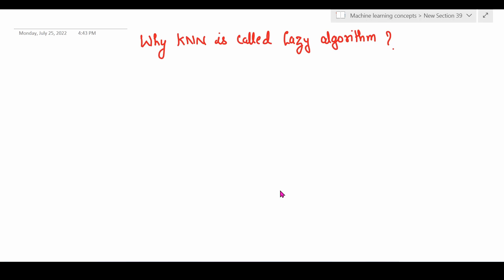Hello everyone. Today's question is: why is KNN called the lazy algorithm? KNN is the K-Nearest Neighbor algorithm, and it is called a lazy algorithm.